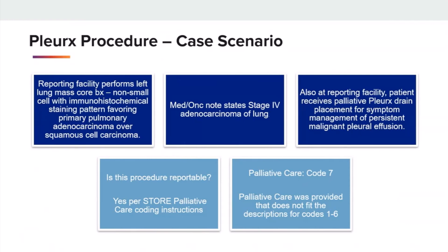Palliative care was provided that does not fit descriptions for codes 1 through 6. Now, if the lung cancer was diagnosed elsewhere and the only care for the cancer provided at the reporting facility was the Plurax drain, the case would not be reportable at the reporting facility because the Plurax procedure does not affect class of case.